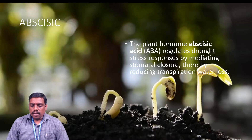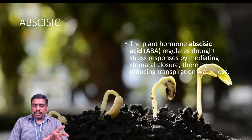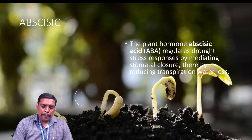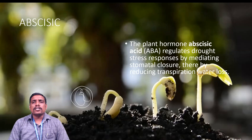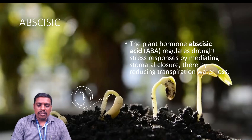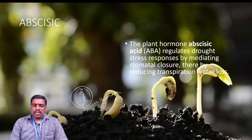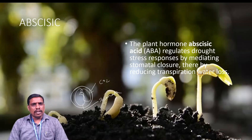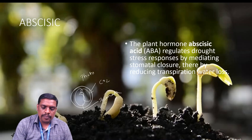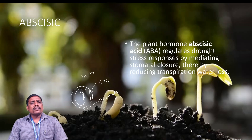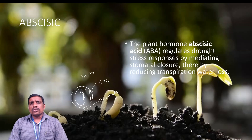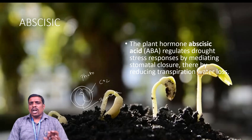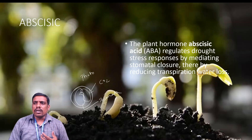The plant hormone abscisic acid regulates drought stress responses by mediating stomatal closure. If stomata close, the carbon dioxide cannot enter into the leaf, which affects photosynthesis. If the stomata are closed, plants cannot receive a sufficient amount of carbon dioxide from the external environment. So if there is no carbon dioxide, the photosynthesis process could not be initiated.